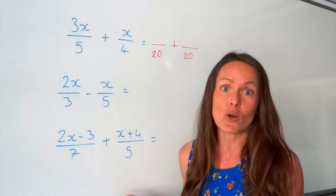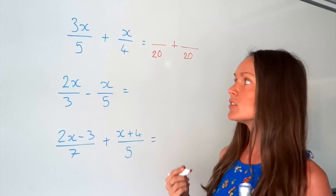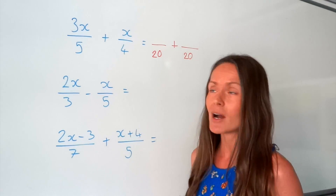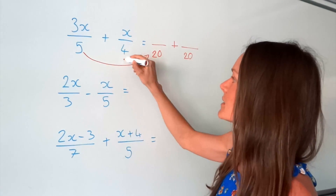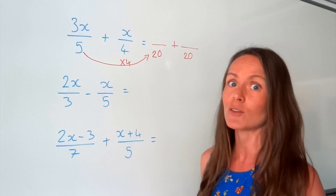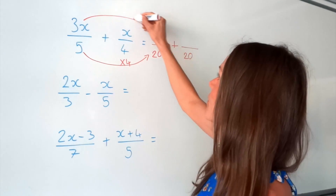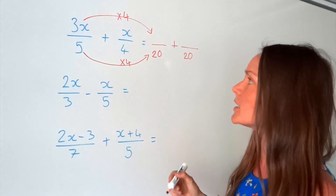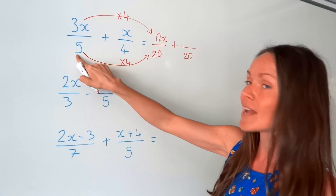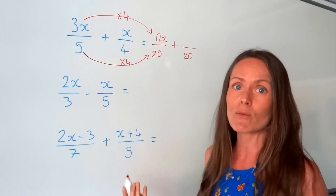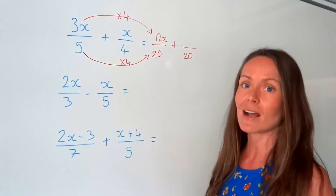You can't just go changing the denominator because you need to find what we call an equivalent fraction. So if you change the denominator, you must change the numerator as well — the number on top. So if we take the first fraction, to change from 5 to 20, I multiplied that number 5 by 4. So I have to do exactly the same thing with the numerator — I multiply that 3x by 4 as well. So 3x multiplied by 4 gives me 12x. This is exactly the same fraction; they're called equivalent fractions. We're just writing them in a different format so that we're allowed to add them later on.